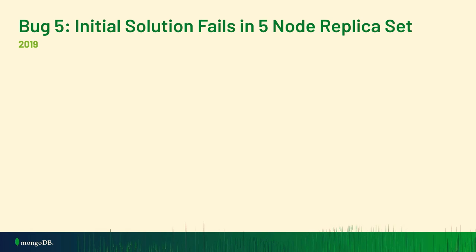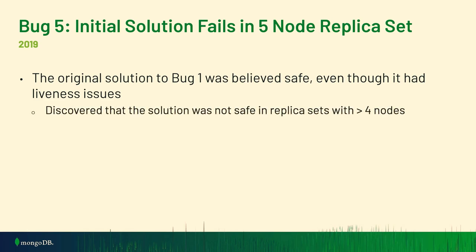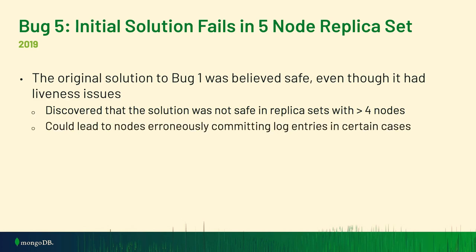After those four bugs were thought to be resolved, we discovered yet another problem. In 2019, we actually discovered that the original solution to the first bug was not always safe. It turns out that in large replica sets with more than four nodes, the protocol could again erroneously commit log entries — the same problem we were originally trying to fix. But this only manifested in large replica sets.